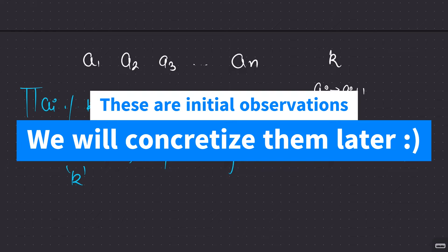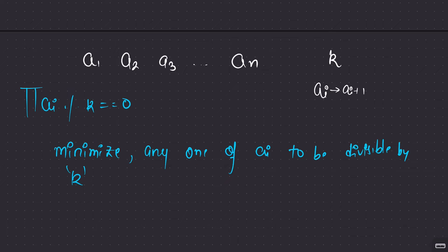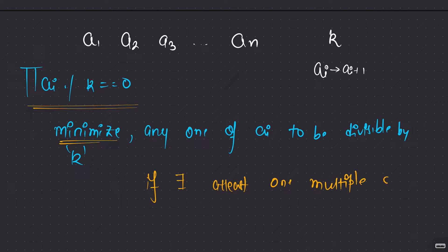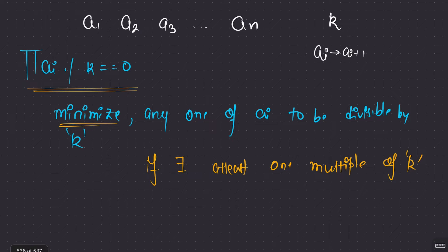Instead of incrementing a lot of them, just focus on one guy and the job is done. If k's multiple exists in the array, the answer is 0. Otherwise, pick the element ai that is nearest to the next multiple of k. I would try to make sure there is at least one multiple of k existing in my array. If it doesn't exist, I will increment some element.